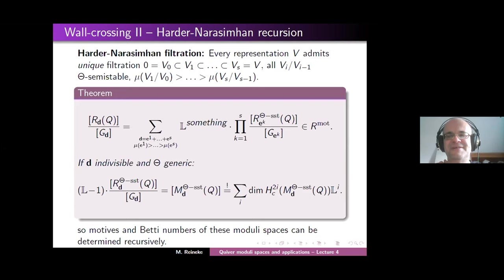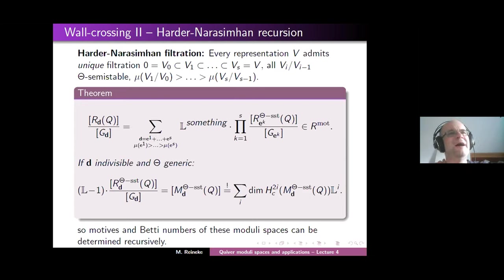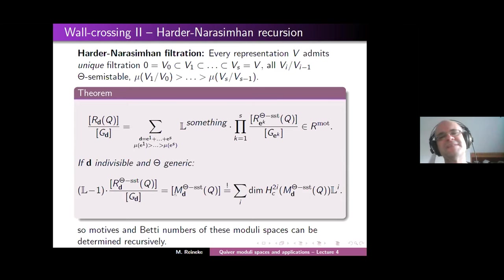Sasha Minets asks: can the wall-crossing formula be upgraded to tell us something about the ring structure of cohomology groups? I don't think so — I have no idea how to bring the ring structure into the game. If you look at this line...